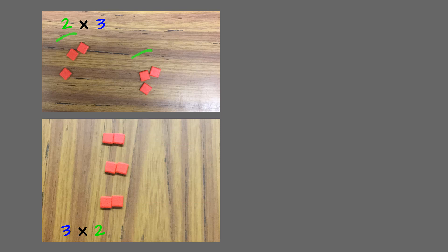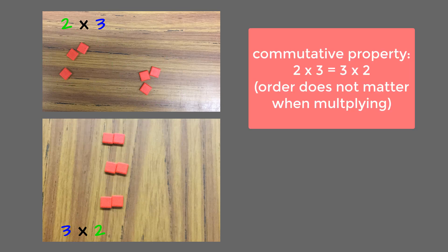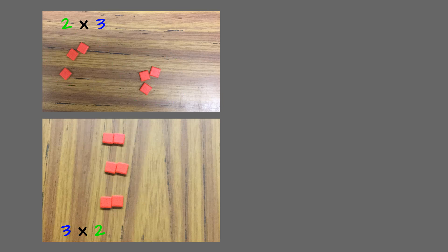Students will make two groups of 3 and three groups of 2, getting them an answer of 6 in both situations, and we want to name that as the commutative property for students. But we want to move past the groups of model to a model that's going to take us into grade 9 and 10 math and beyond.